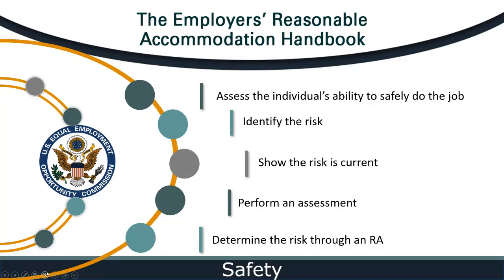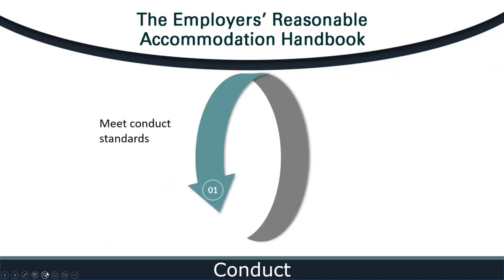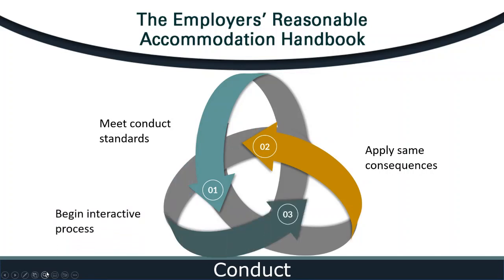Julie, employers often ask us questions about reasonable accommodations related to conduct and performance. Let's start with conduct. Based on the guidance from the EEOC, employers can generally expect all employees, including employees with disabilities, to meet their conduct standards. If an employee with a disability violates a conduct rule and disability is not a contributing factor, the employer can apply the same consequences it would apply to any employee who broke the same rule. When an employee responds to discipline for misconduct by disclosing a disability and requesting a reasonable accommodation, the employer should begin the interactive process just as they would with any request, and may apply the consequences for the misconduct as long as the conduct rule is job-related, consistent with business necessity, and equally applied to all employees.